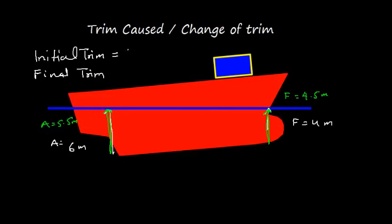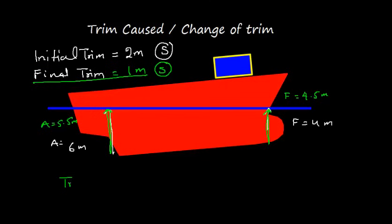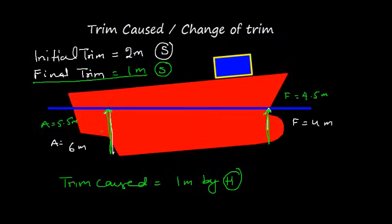The trim caused is the difference between initial trim and final trim. The initial trim was 4 meters and 6 meters, that is 2 meters by stern. After shifting the weight, my trim has become 4.5 and 5.5, that is 1 meter by stern. So instead of 2 meters trim, the trim has reduced to 1 meter. The trim caused is 1 meter by head, because the forward draft increased and aft draft reduced.